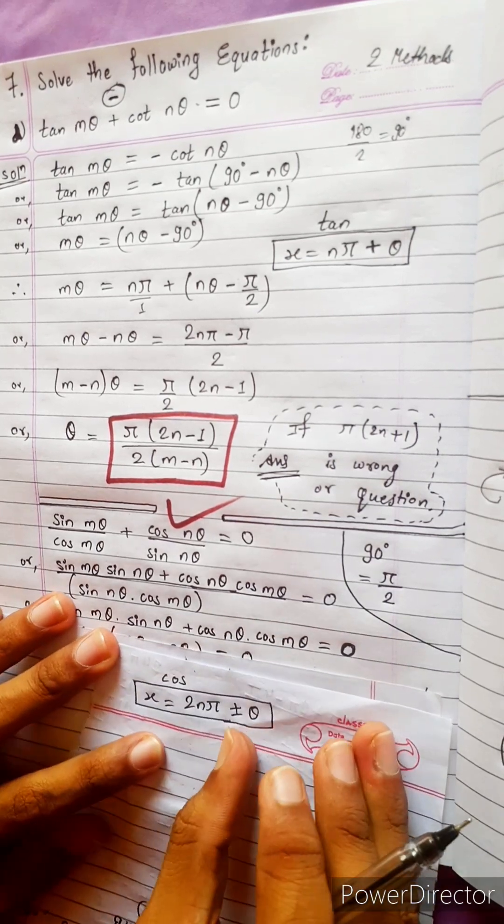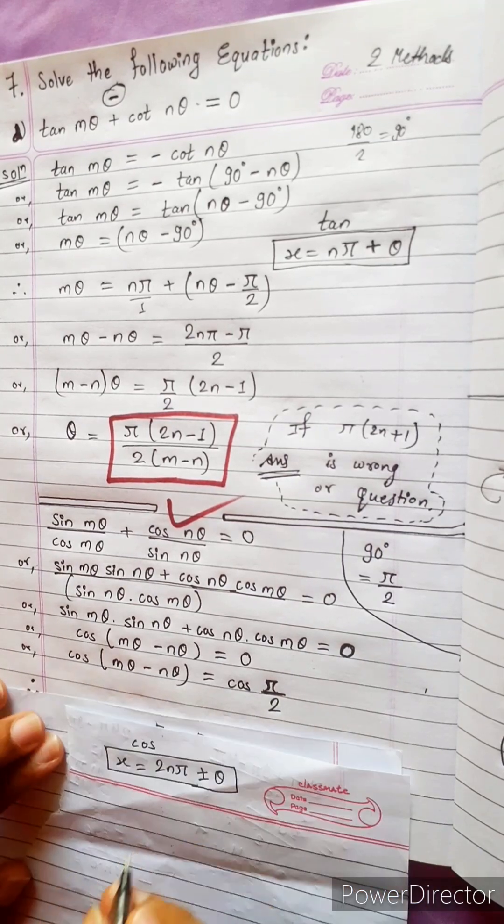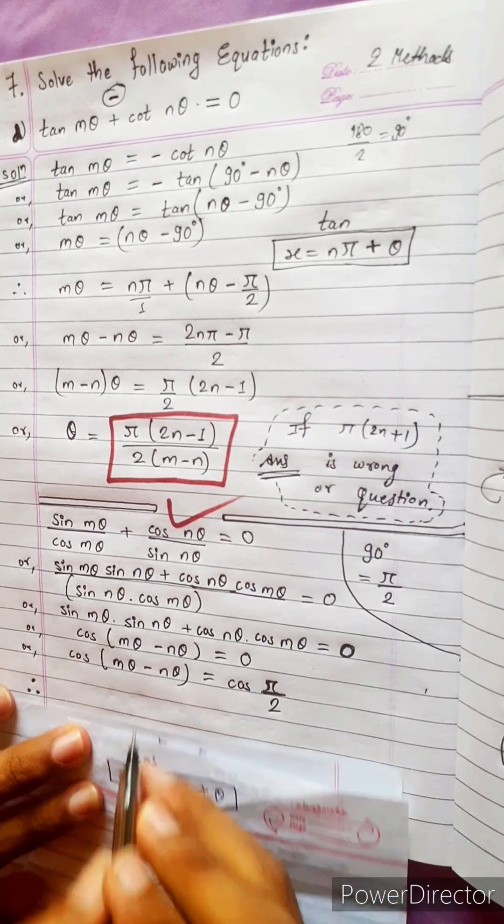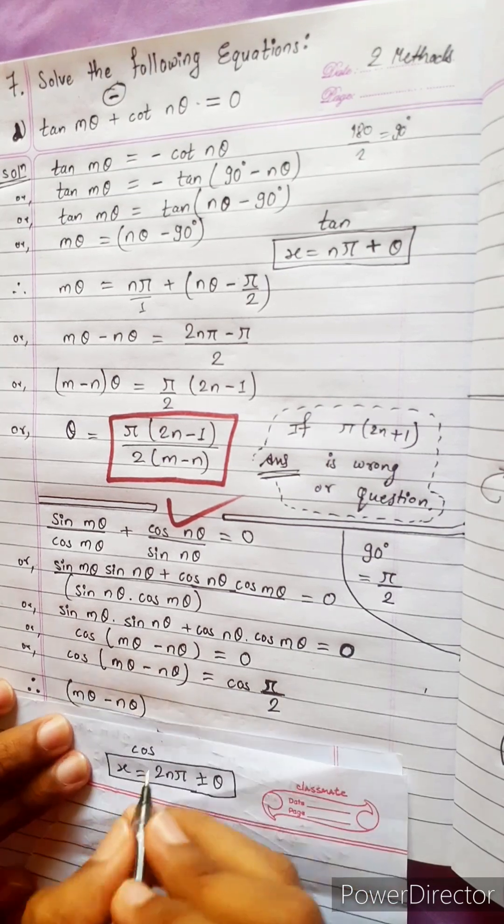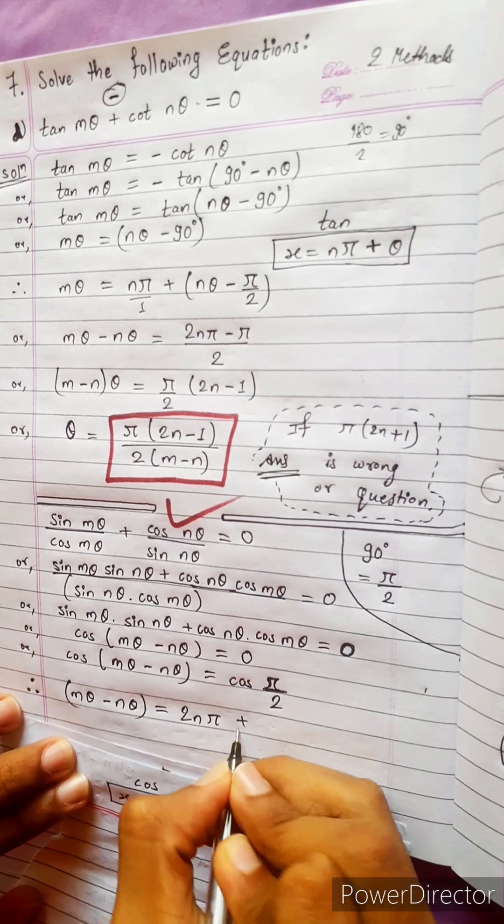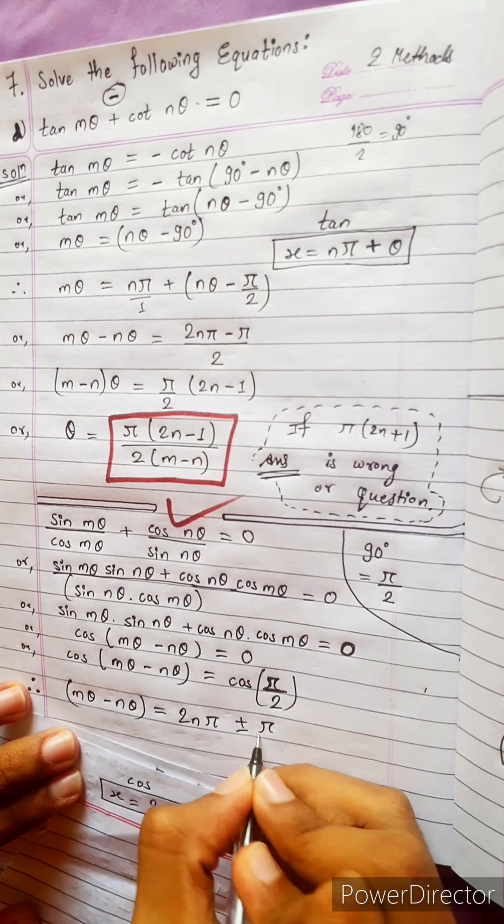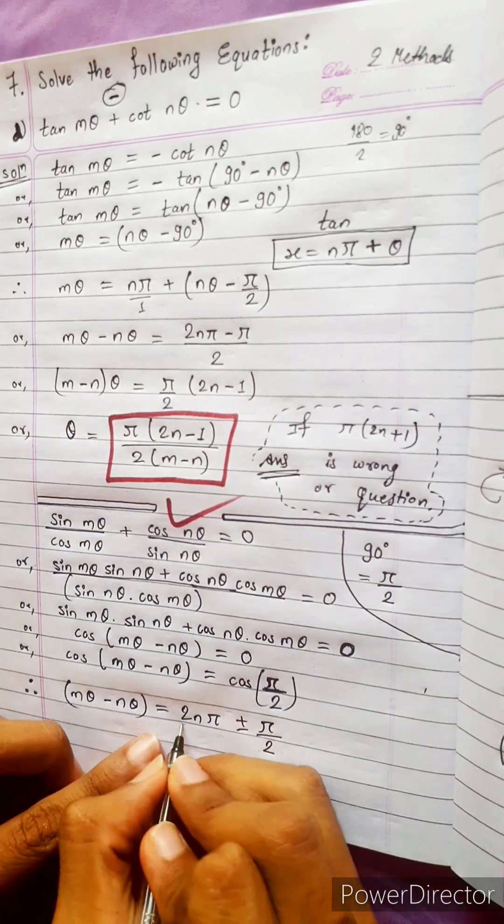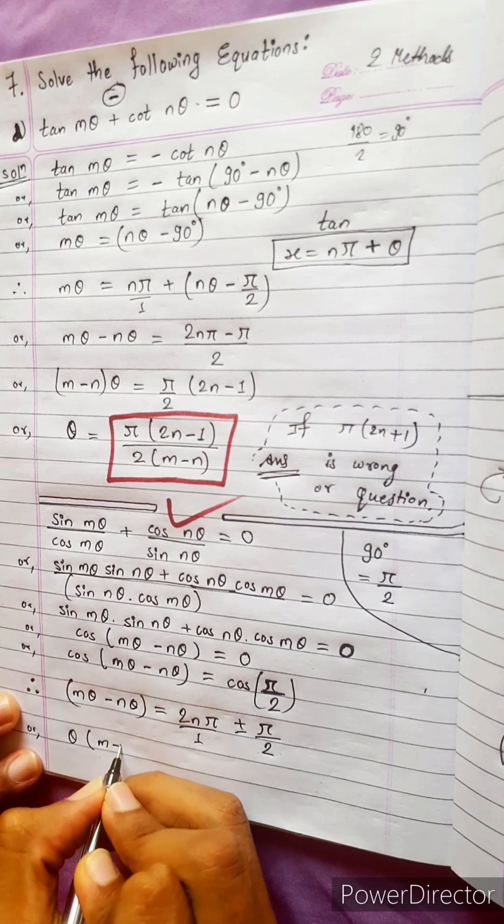This is the formula. So let's write therefore x means how much. X means whatever we have on our left side, this is our x equals to 2n pi plus minus theta means our angle, this is our angle. Now what can we do, we can take theta common also m minus n.